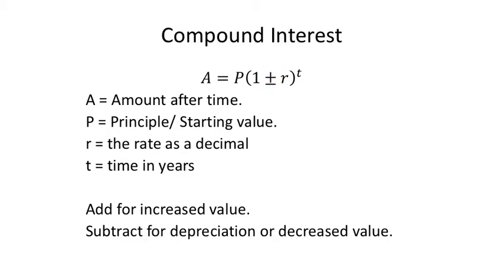Depreciation is the minus — that's where you're losing value. Addition is where you're gaining value, whether it's value you owe on a loan or value that's owed to you in an account that grows. A is the amount after time T. Whenever we see T in these equations, it usually represents some form of time. For compound interest, it's usually calculated in years. If you're dealing in months, take the number of months and divide by 12 to get your T value.